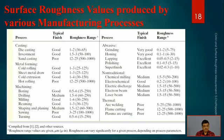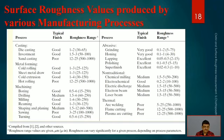Surface roughness values produced by various manufacturing processes give manufacturers a clear understanding of what surfaces each process can produce. Die casting and investment casting give excellent surfaces; sand casting gives poor surfaces requiring much post-machining. In metal forming, cold rolling and cold extrusion give good surfaces, while hot rolling gives poor surfaces due to dimensional deviations and scale formation. The surface roughness ranges for each process are available in handbooks, which engineers refer to before manufacturing.